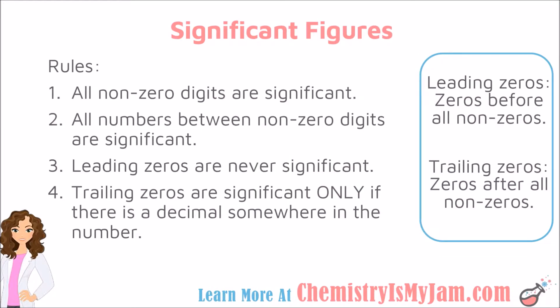There are some rules for significant figures. These are the rules that you would use if you were reading someone else's data and trying to determine which of the numbers in their data came exactly from their lab equipment — which of their numbers represent valid measurements. The first rule: all non-zero digits are significant.